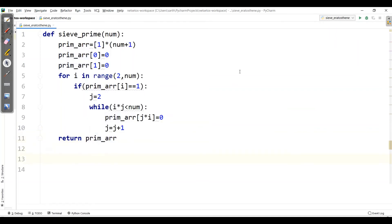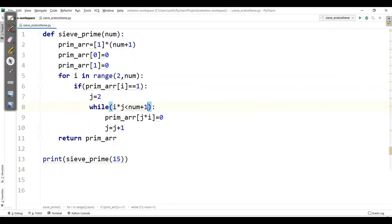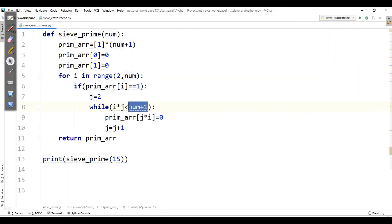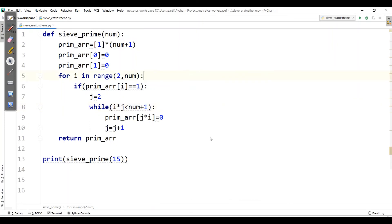Then we need to call our function. Let's check for 15. Here we should have plus 1, as we are always checking up to 15. When we write programs in Python, it should be num plus 1 so that it can check up to num. Let's run the program.